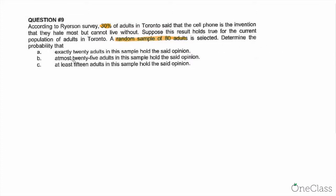Determine the probability that: A, exactly 20 adults in this sample hold the said opinion; B, at most 25 adults; and C, at least 15 adults hold the said opinion.